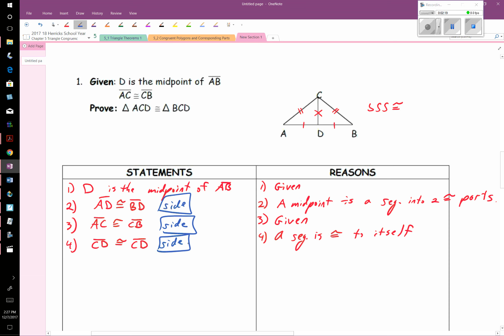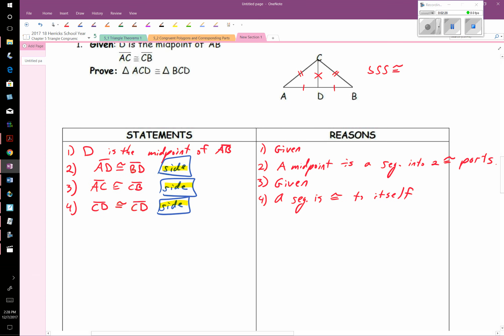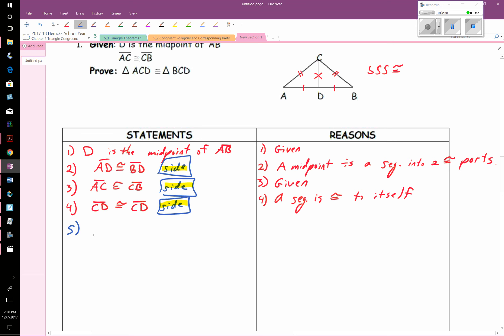Check it out. I have now three pieces of information I need. I could state that these triangles are congruent. So let's do that. The last step is this. So five, triangle ACD is congruent to triangle BCD.